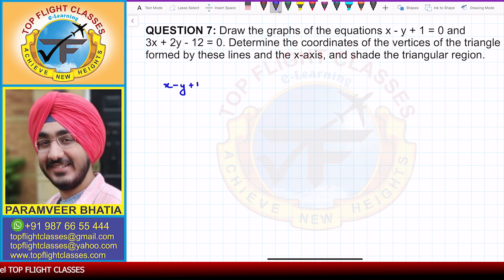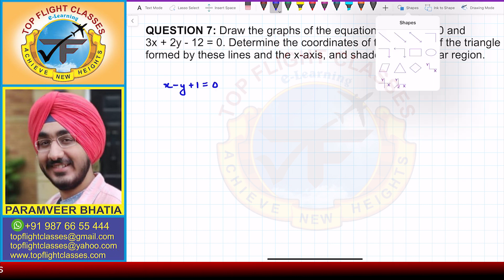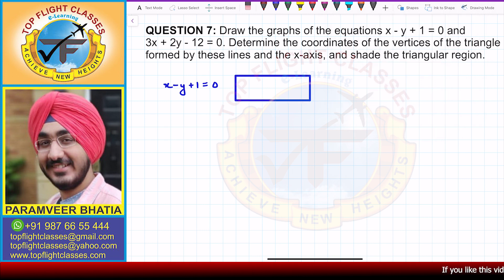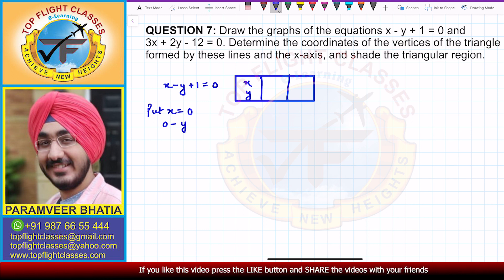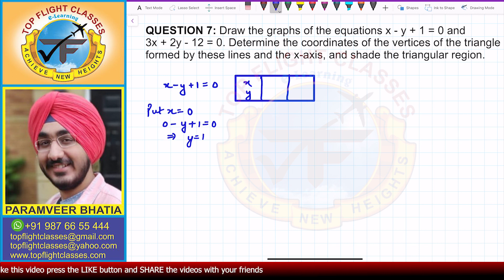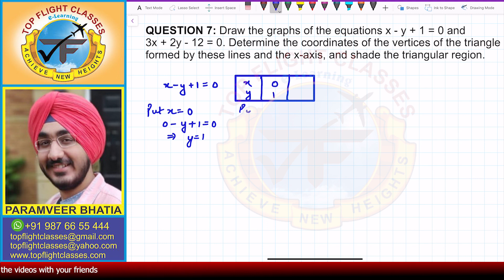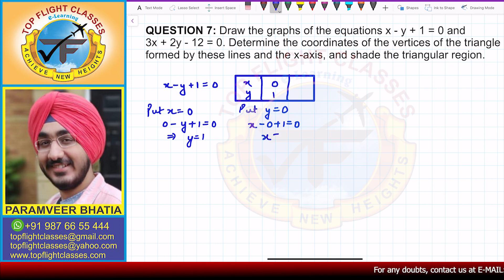We have two equations. The first one is x minus y plus 1 equal to 0. To draw its graph, I'll make a table with x and y values. Putting x equal to 0: 0 minus y plus 1 equals 0, so y equals 1 — giving point (0, 1). Putting y equal to 0: x minus 0 plus 1 equals 0, so x equals minus 1 — giving point (-1, 0).